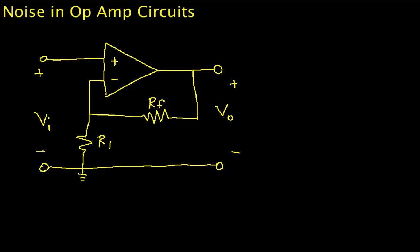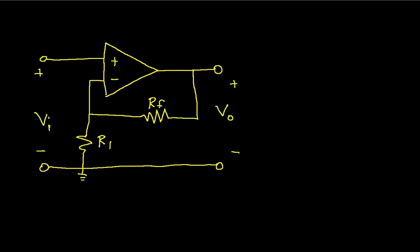Welcome to part two of the video describing how to compute noise in op-amp circuits. In part one, we talked about modeling the noise generated in the op-amp itself and in the resistors using noiseless op-amps with a noise source — in this case, a voltage source connected to the non-inverting input, called an input-referred noise source. The resistors are modeled as noiseless resistors in series with a voltage source.